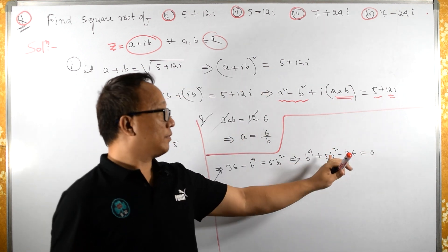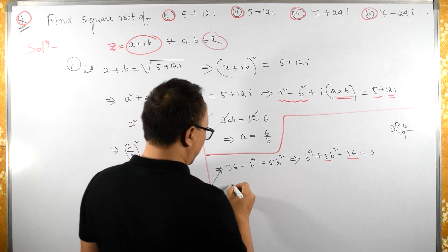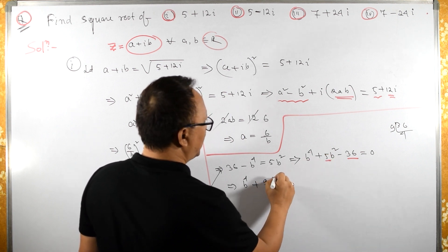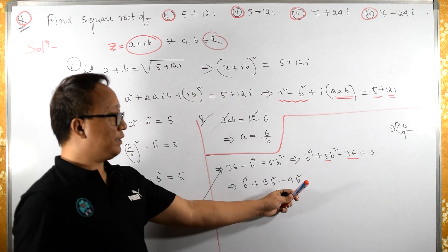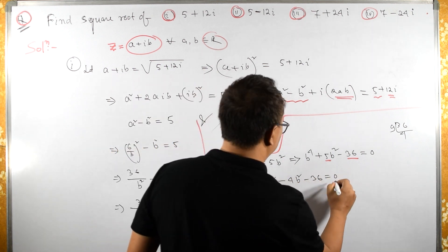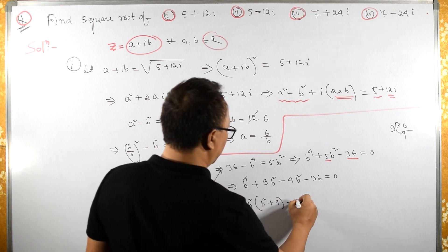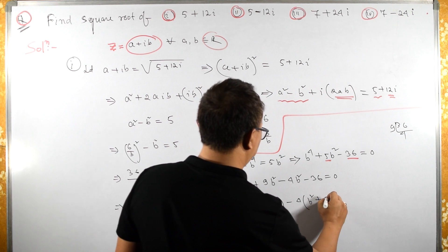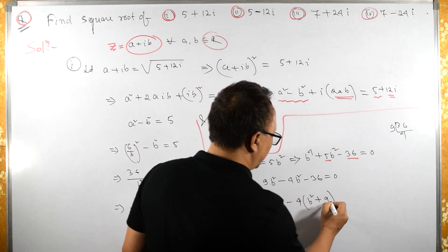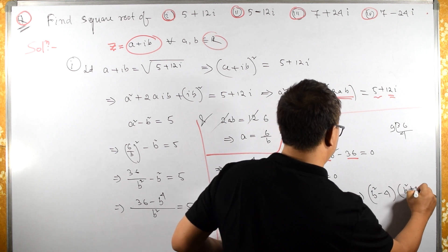Now let us factor this. We can split 5b squared as 9b squared minus 4b squared, because 9 minus 4 is 5, and 9 times 4 is 36. So: b squared(b squared plus 9) minus 4(b squared plus 9) equals 0, which gives us (b squared minus 4)(b squared plus 9) equals 0.